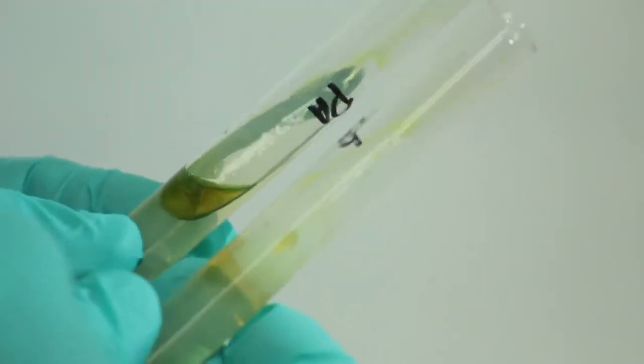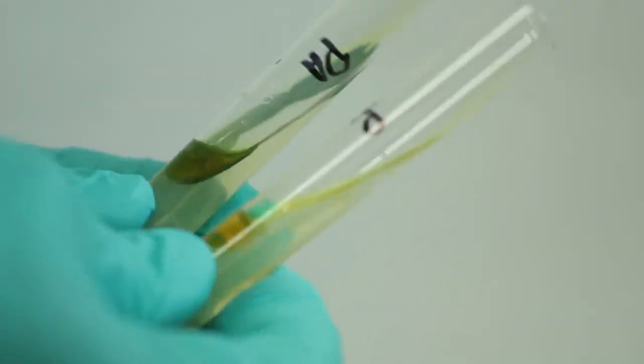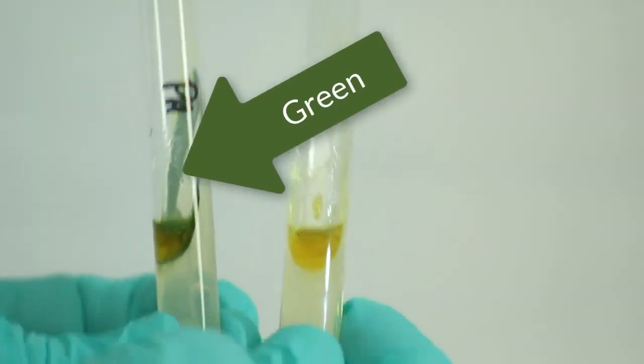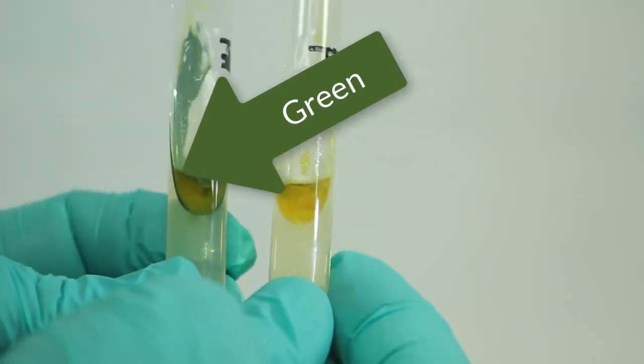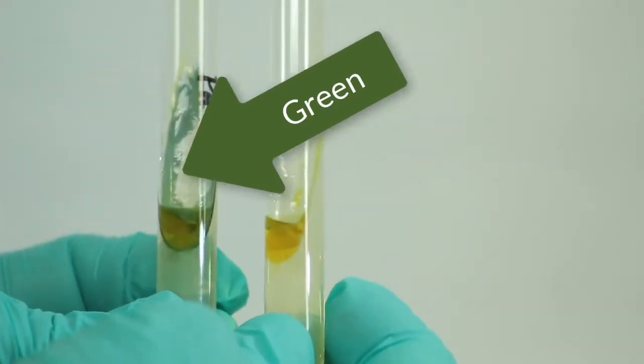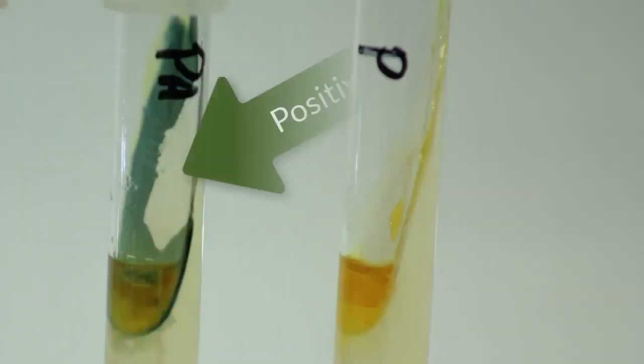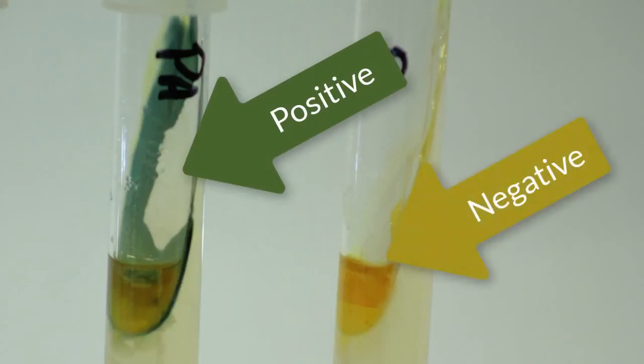A reaction for phenylalanine will appear as green. Notice at this time this tube is bright green already on the slant and all the way to the base of the slant, while the other tube is still yellow. So this tube is positive and this tube is a negative reaction.